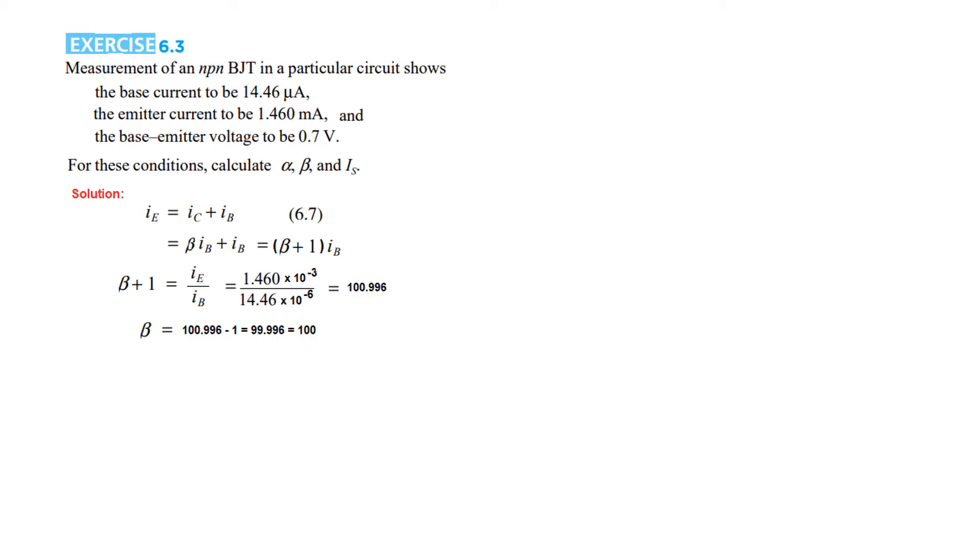Now we know the formula from beta to alpha conversion: alpha = beta/(beta + 1). Plugging in these values, we get alpha = 0.989, which is almost equal to 0.990.